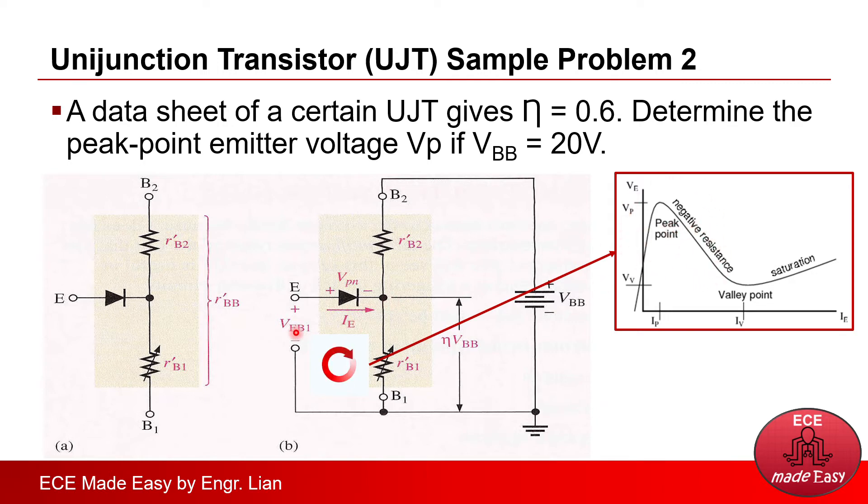So, if we are going to use KVL around this loop, that is VE, or in this case, Vp is equals to the voltage across the diode, Vpn, plus the voltage across RB1. So, following that loop, we will derive at this equation that Vp equals to N Vbb plus Vpn.